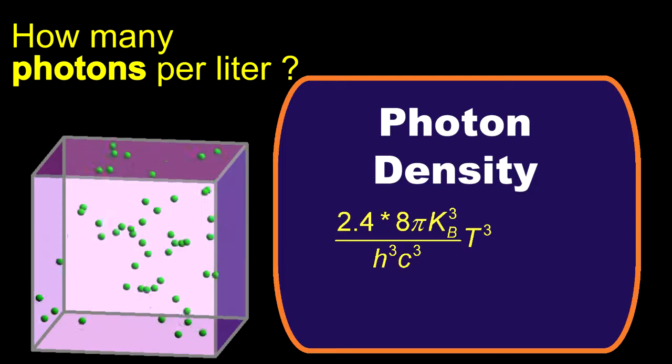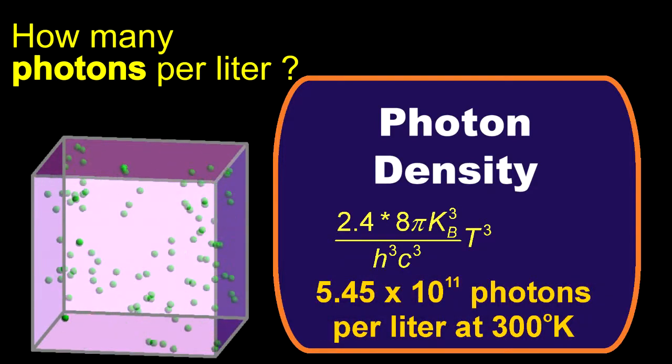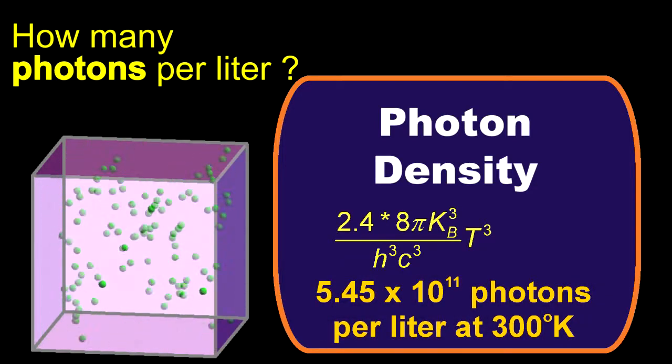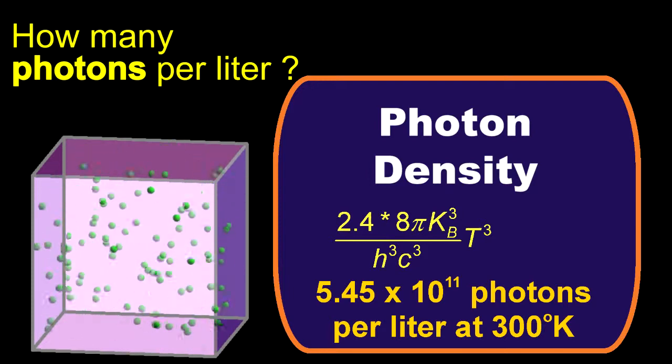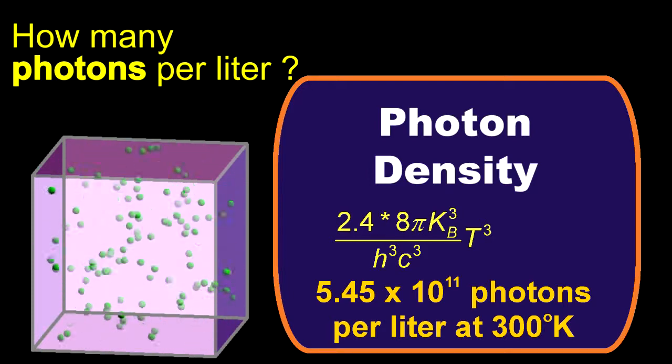When you put in numbers for the variables, you find that a one liter container at room temperature and atmospheric pressure contains 5.45 times 10 to the 11th photons.